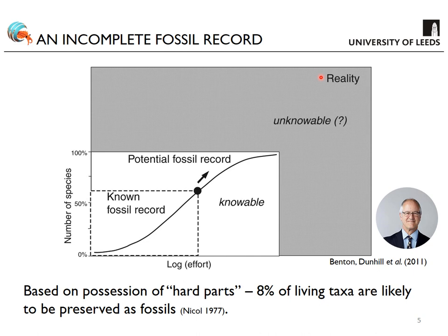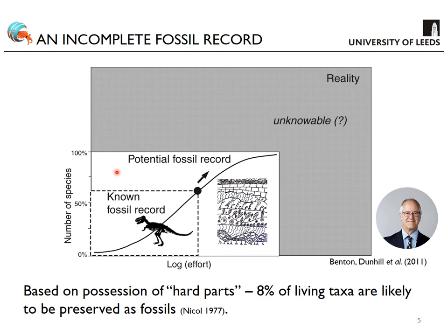There are three blocks in this schematic. At the bottom is the known fossil record — all fossils discovered and documented. Beyond that is the potential fossil record: all fossils preserved in rocks yet to be discovered, representing the theoretical maximum of knowledge we could accrue. One day we may approach that maximum, but I don't think we're near it yet. Beyond that is the wider unknowable reality — all life forms that have ever lived but have not been preserved in the fossil record and will therefore never be known to science.